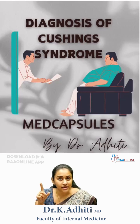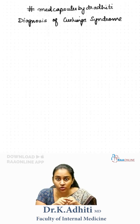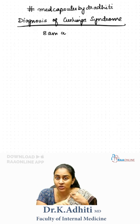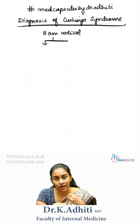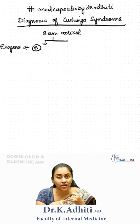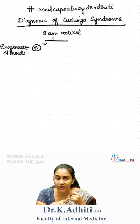Cushing's has eight letters and there are eight important steps in the diagnosis of Cushing's syndrome. The first step is going to be the 8am serum cortisol. If this is not going to be suppressed, then you're looking at a diagnosis of exogenous steroid intake.